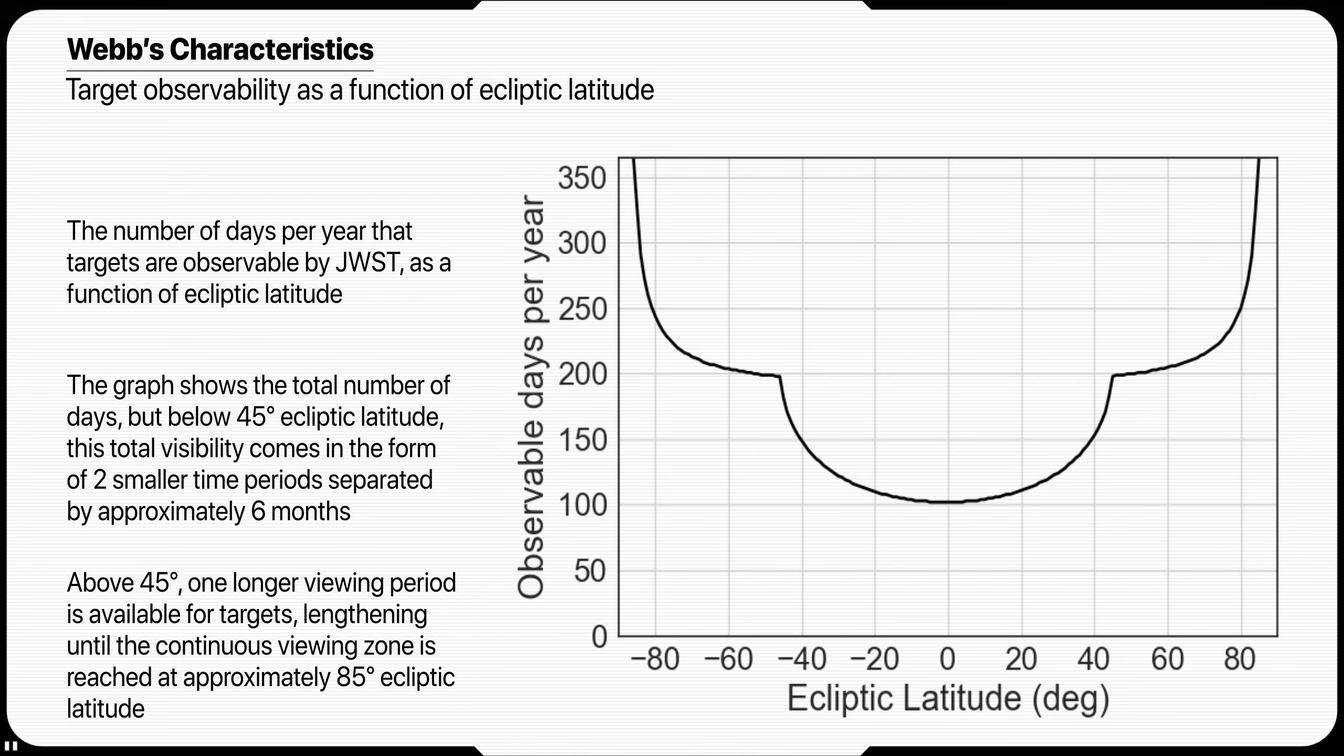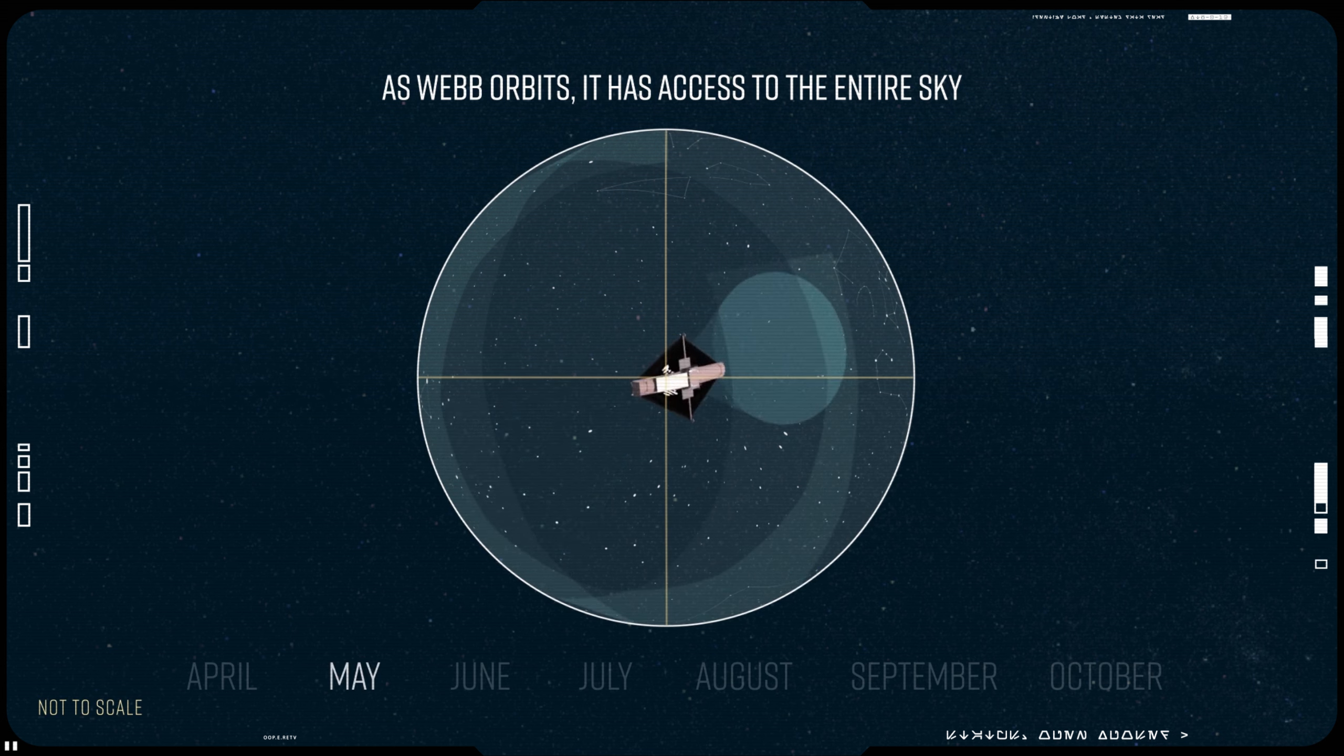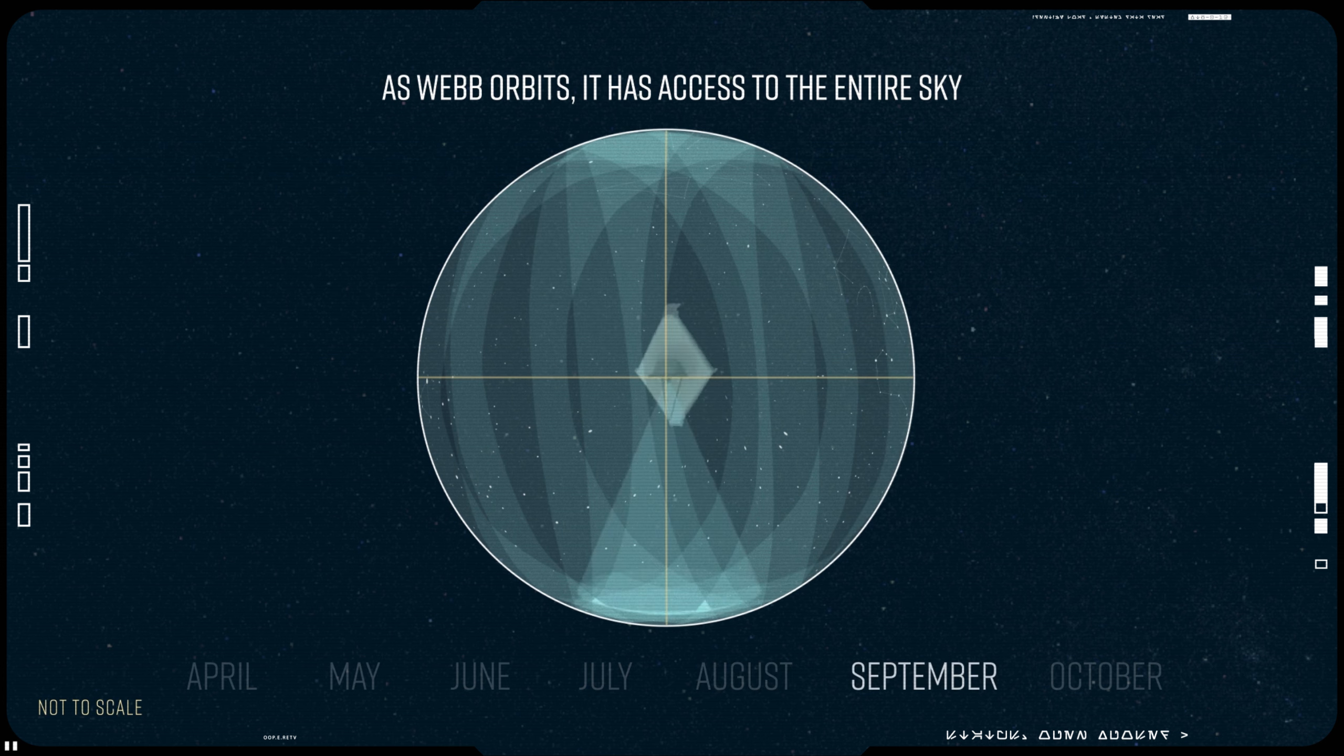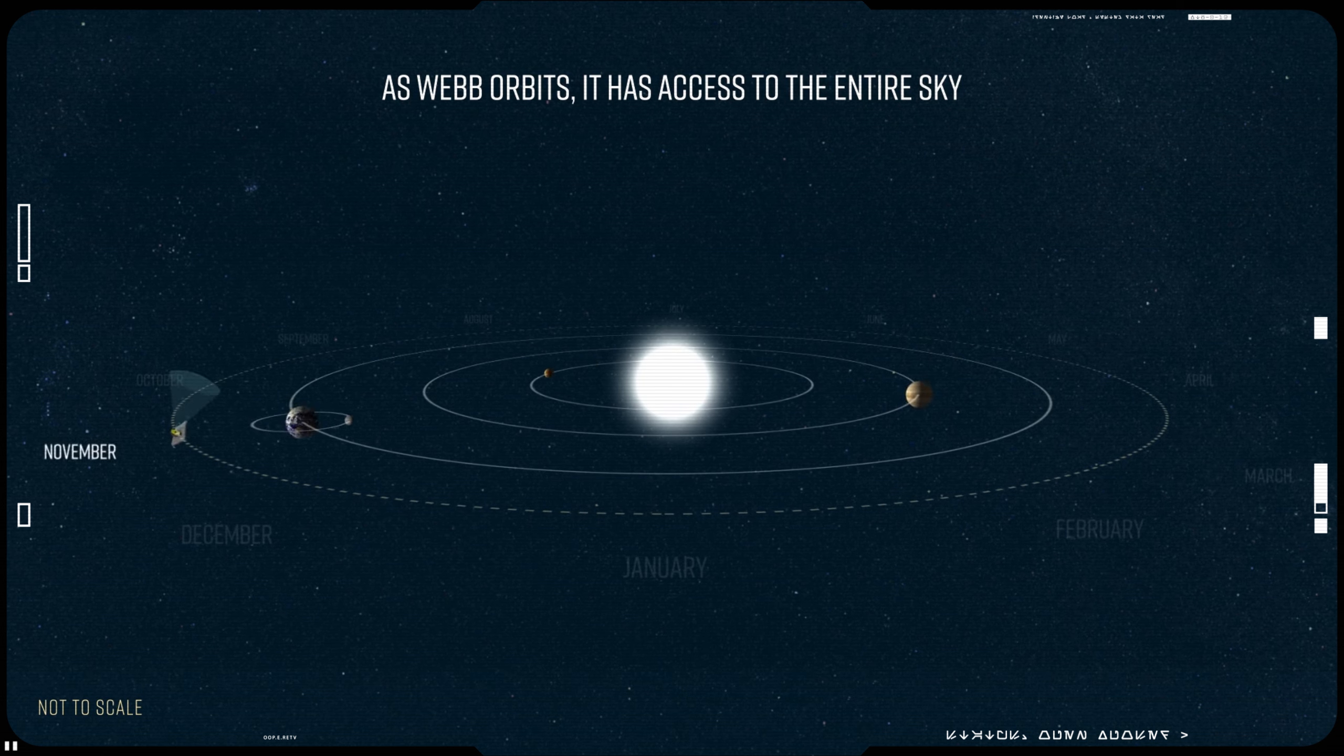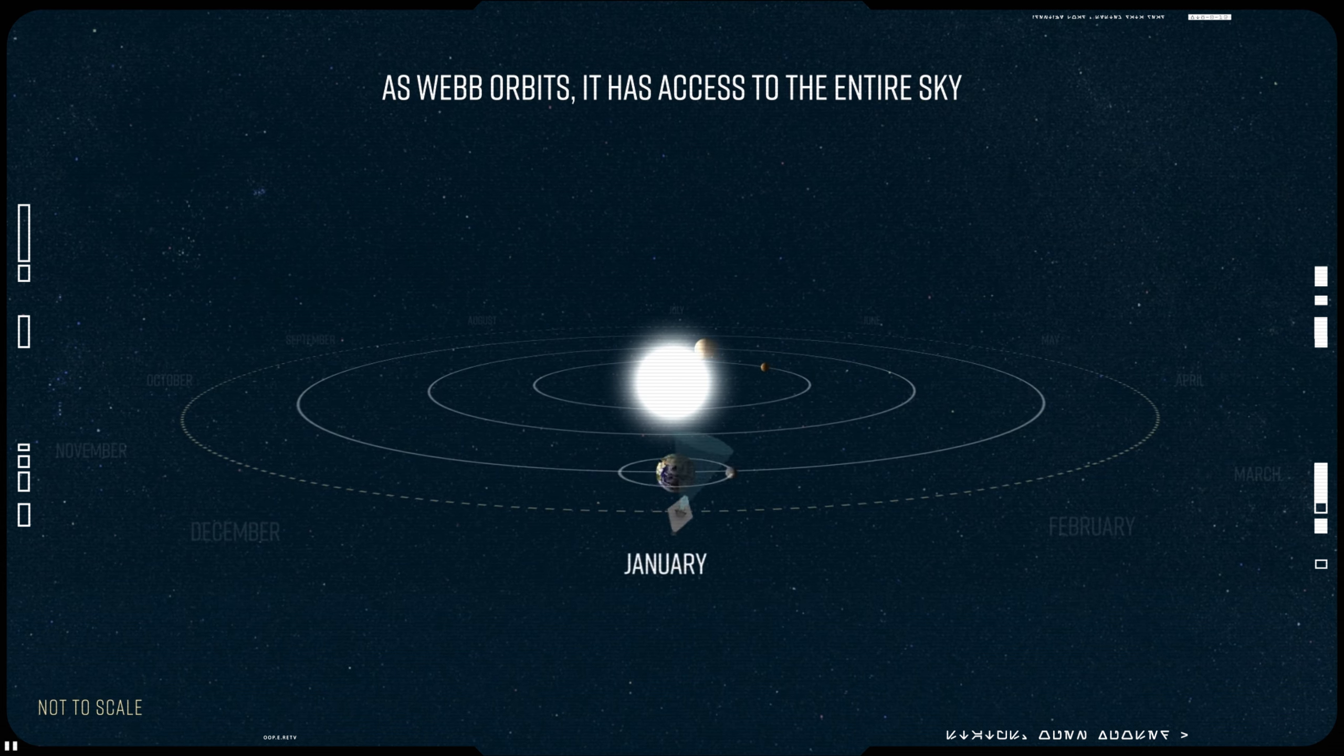Above 45 degrees and below 85 degrees ecliptic latitude, the visibility windows transition to one much longer visibility period. Ecliptic latitude determines the number of days per year the targets are observable by James Webb. Also, the allowed field view position angles on the sky available for a given target are affected by the target's ecliptic latitude.